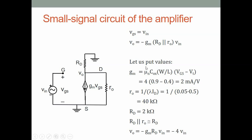Computing the values: g_m = mu_n * C_ox * W/L * (V_gs - V_t) = 4 * (0.9 - 0.4) = 2 mA/V. r_o = 1/(lambda * I_D) = 1/(0.05 * 0.5mA) = 40 kilo ohms. Since R_D = 2 kΩ in parallel with 40 kΩ is approximately 2 kΩ, the voltage gain is V_o = -g_m * R_D * V_in = -2 * 2 * V_in = -4 * V_in. Our first amplifier has a voltage gain of magnitude 4.